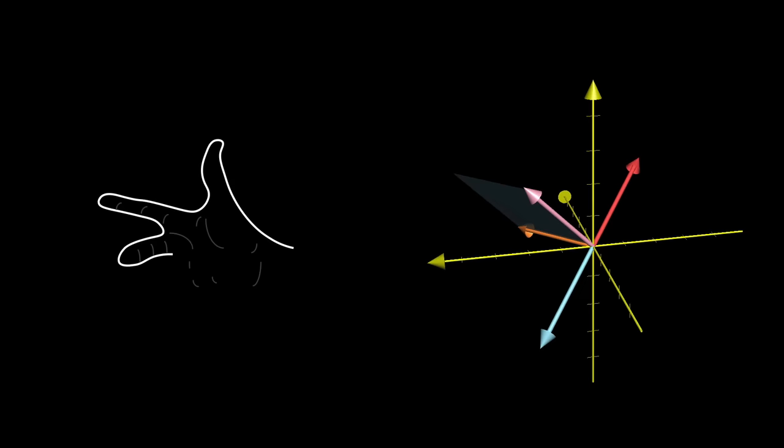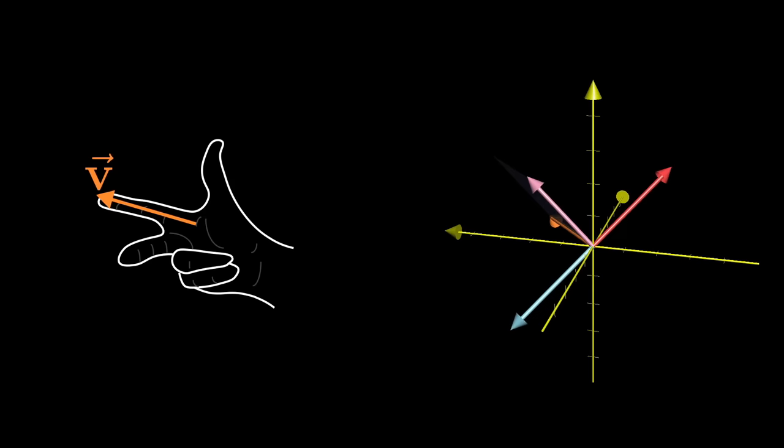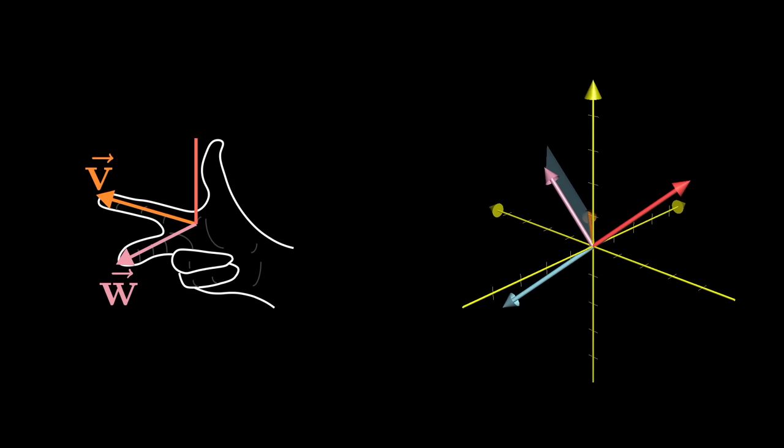This is where the right hand rule comes in. Point the forefinger of your right hand in the direction of v, then stick out your middle finger in the direction of w. Then, when you point up your thumb, that's the direction of the cross product.